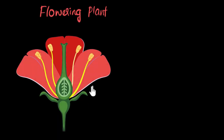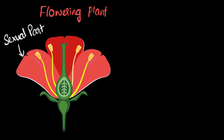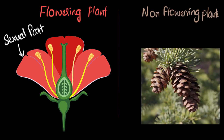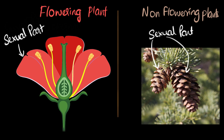If you look at flowering plants, which are also called angiosperms, the flower represents the sexual part of that plant. On the other hand, non-flowering plants, also called gymnosperms, have cones that represent their sexual parts. In this video, we will look at the different parts of the flower, and focus on unisexual and bisexual flowers, along with some examples.